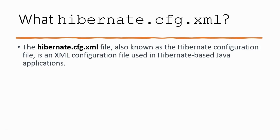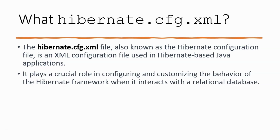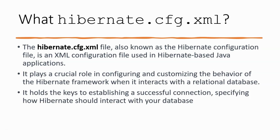The hibernate.cfg.xml file, also known as the hibernate configuration file, is an XML configuration file used in hibernate-based Java applications. It plays a crucial role in configuring and customizing the behavior of the hibernate framework when it interacts with a relational database. At its core, it holds the keys to establishing a successful connection and specifying how hibernate should interact with your database.